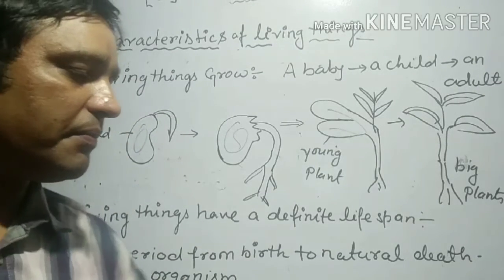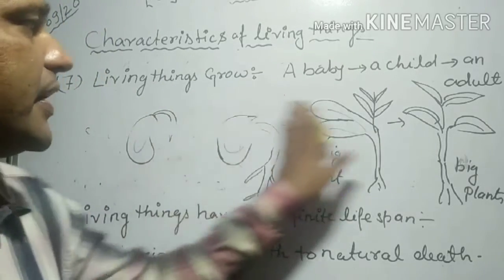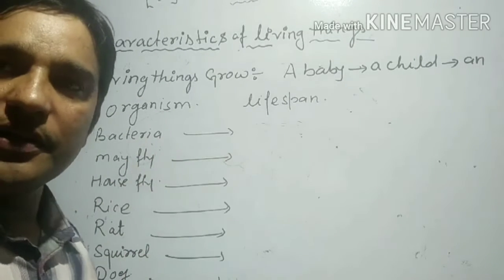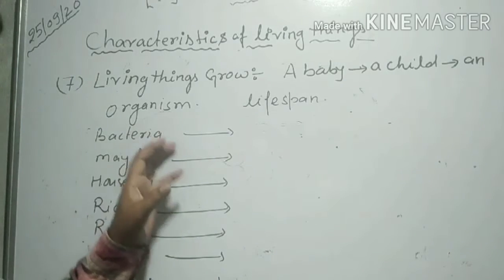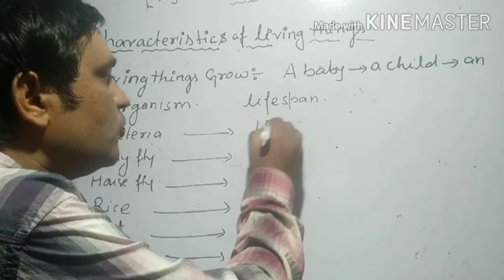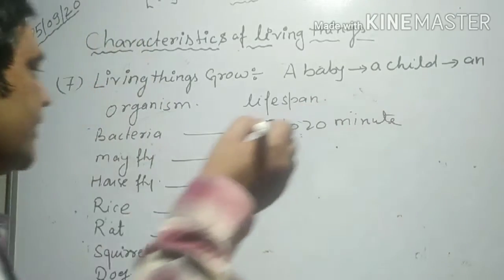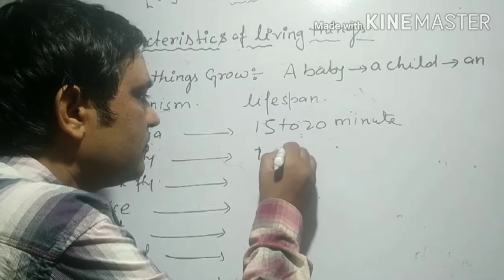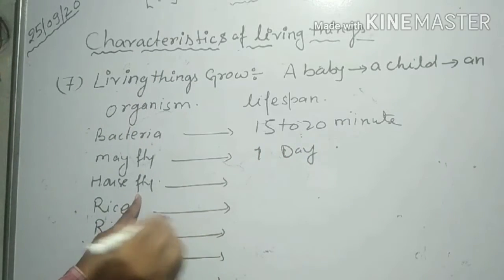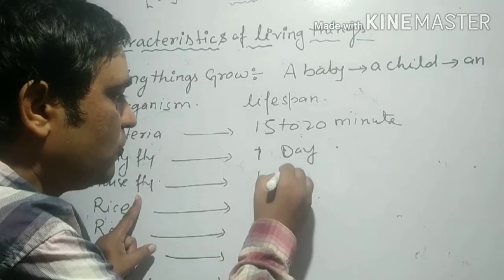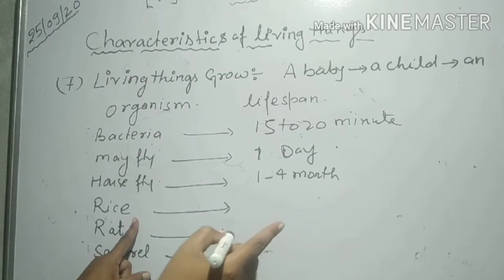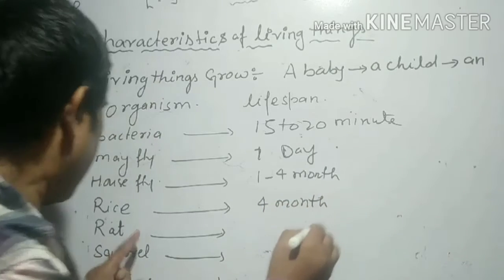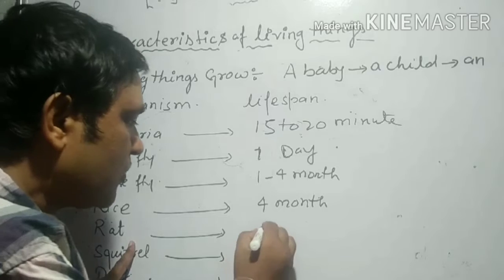Now let's see examples of life spans of certain animals — think of it as the expiry date of an organism. The life span of bacteria is 15 to 20 minutes. The life span of a house fly is 1 to 4 months.